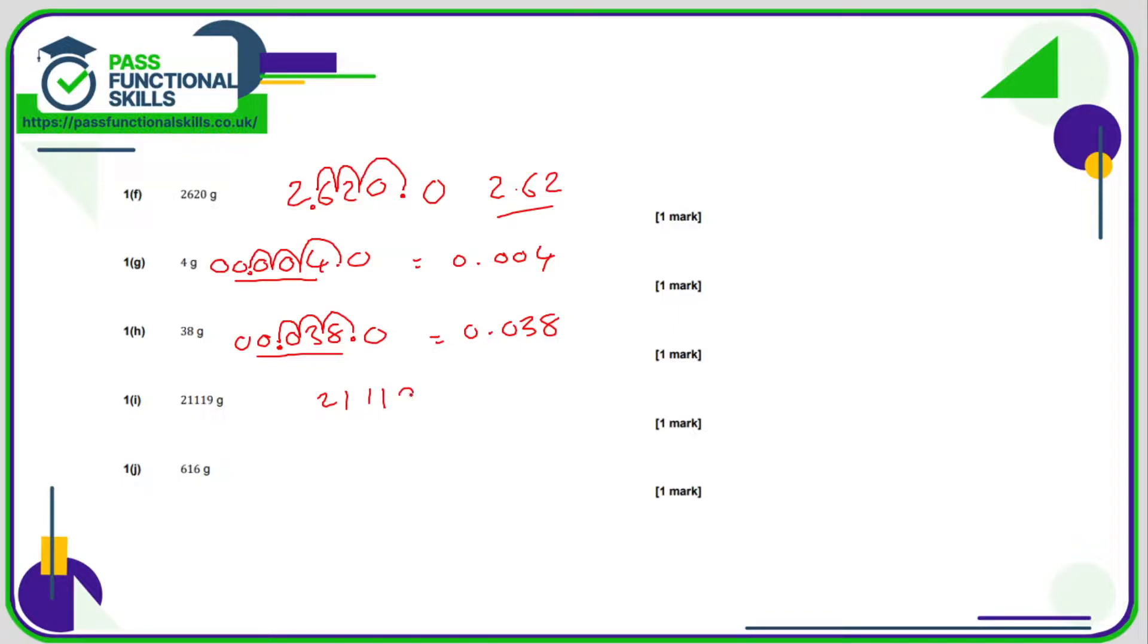21119 grams is 21119.0. Move the decimal point three positions. We get 21.119.